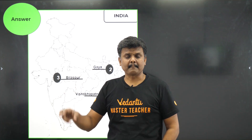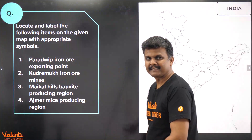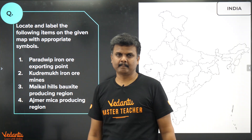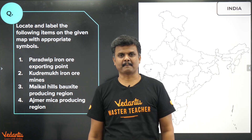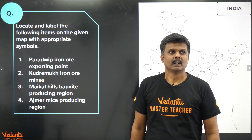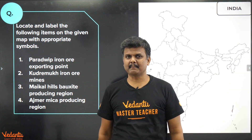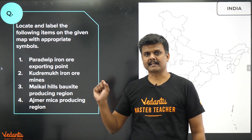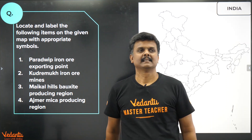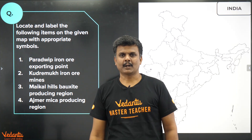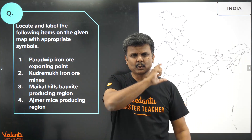Here is your homework: label the following items on the given map. Number one: Paradip iron ore exporting point. Number two: Kudremukh iron ore mine. Number three: Maikal Hills bauxite producing region. Number four: Ajmer mica producing region. Label all of these on your map and post your answers in the comment section.